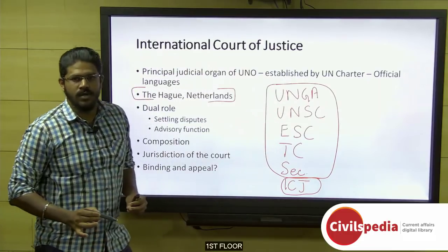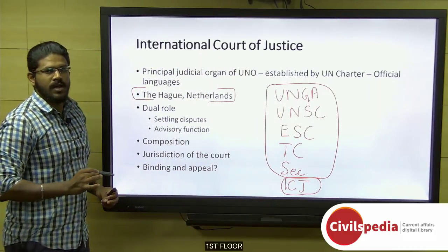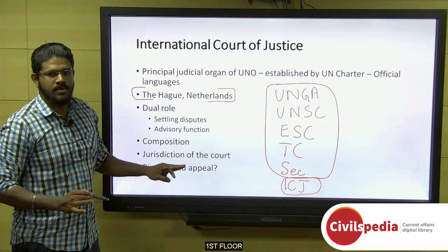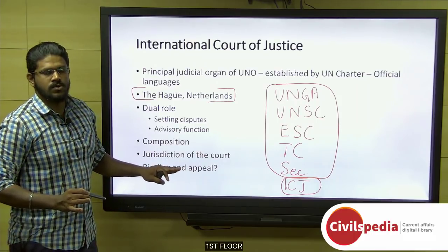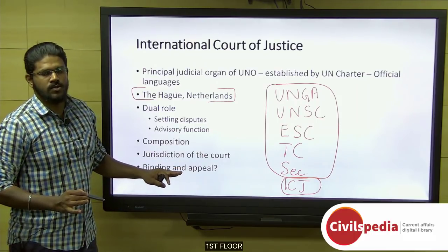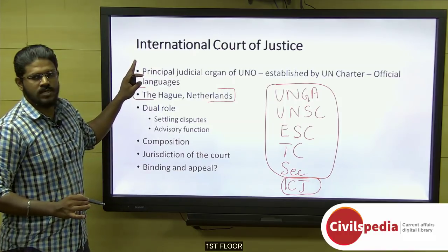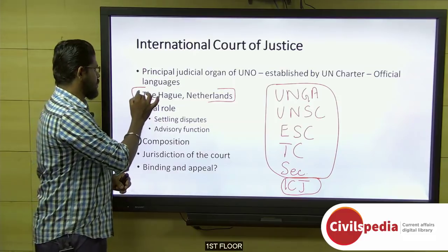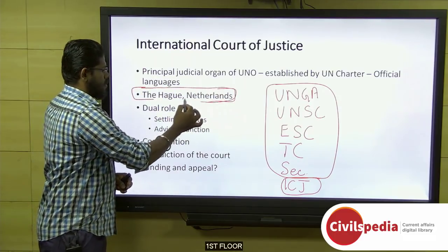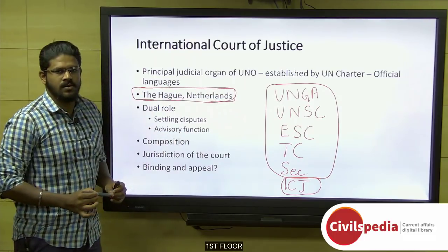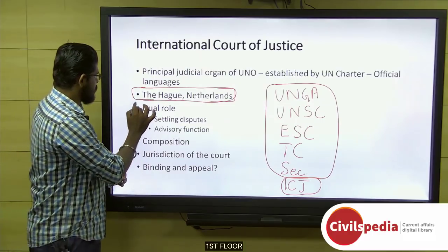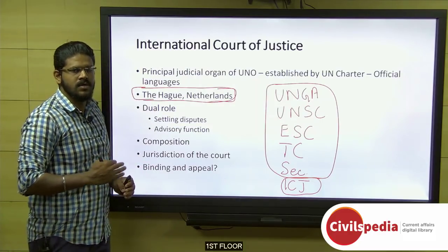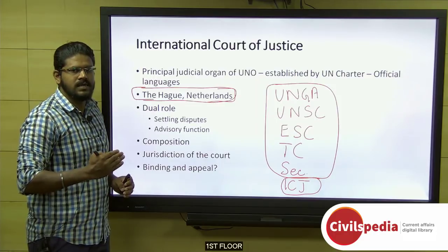Except for the ICJ, all five other principal organs of the UN are located in the United States of America. The ICJ is the only principal organ of the UN not located in the USA — it has its seat in the Peace Palace, located in The Hague, Netherlands.